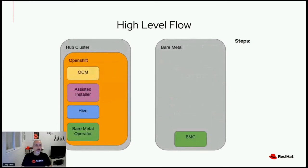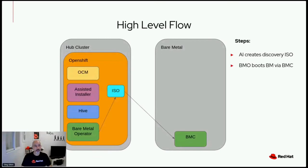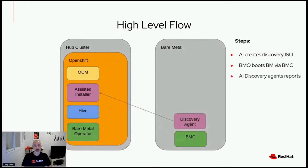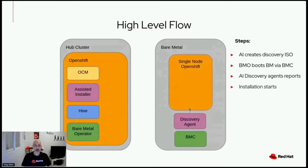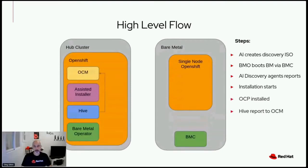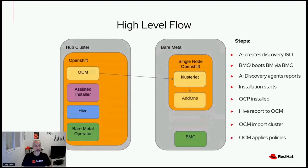Let's walk through the high-level flow. First, the Assisted Installer generates an ISO according to parameters defined in the CRDs. Once the ISO is ready, the bare metal operator connects to the bare metal via the BMC interface and boots it with the ISO. Once booted, the Assisted Installer agent collects hardware information and reports back to the Assisted Installer service. Once required validations are made — checking for sufficient RAM and CPUs — the Assisted Installer kickstarts the installation on the SNO cluster. Once installed, Hive reports via CRD to OCM that the cluster is ready, and OCM imports the cluster, deploys its agent called clusterlet, applies policies, and configures Prometheus to report metrics.